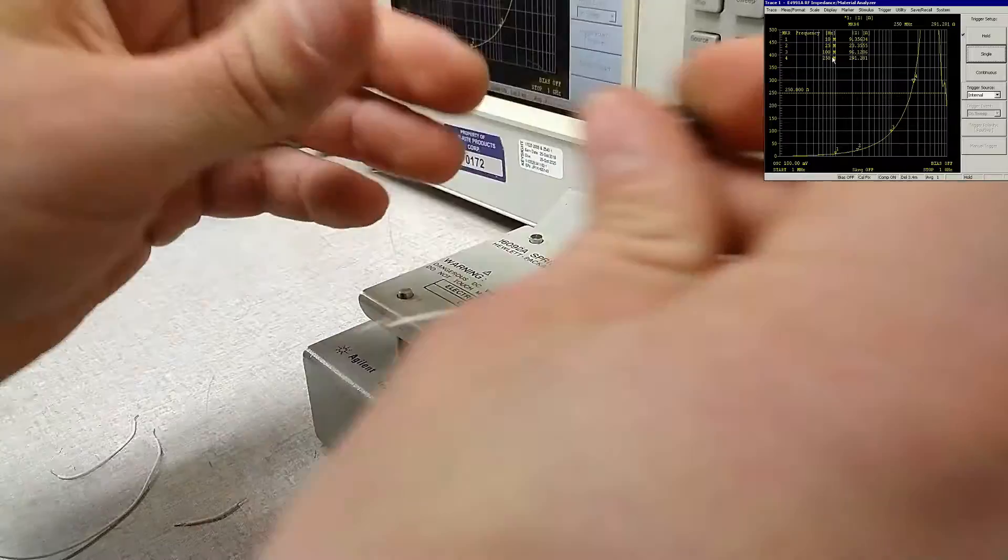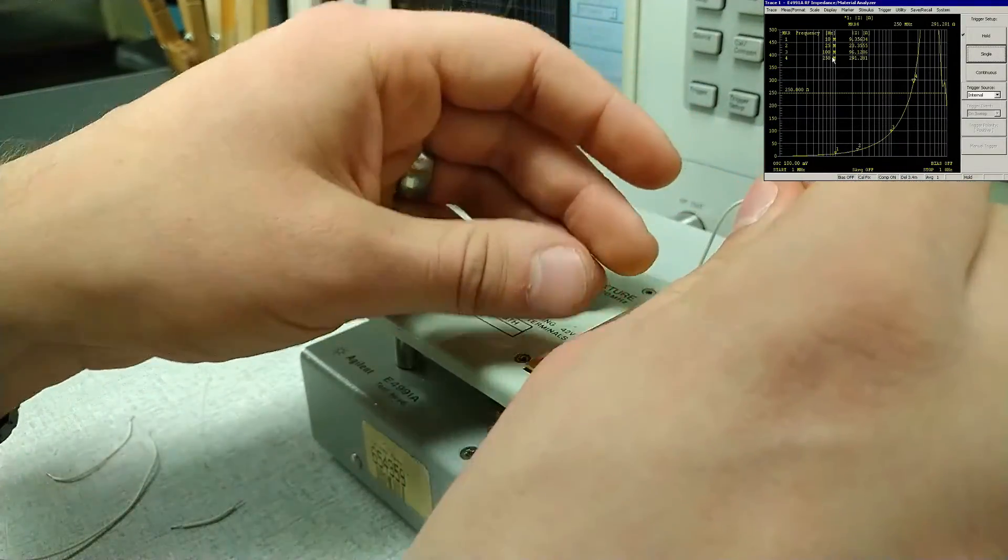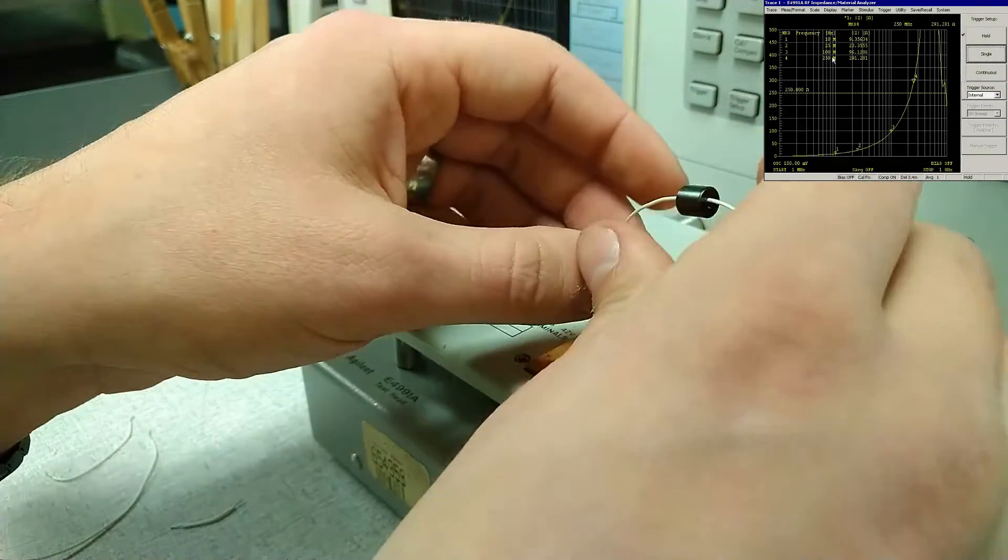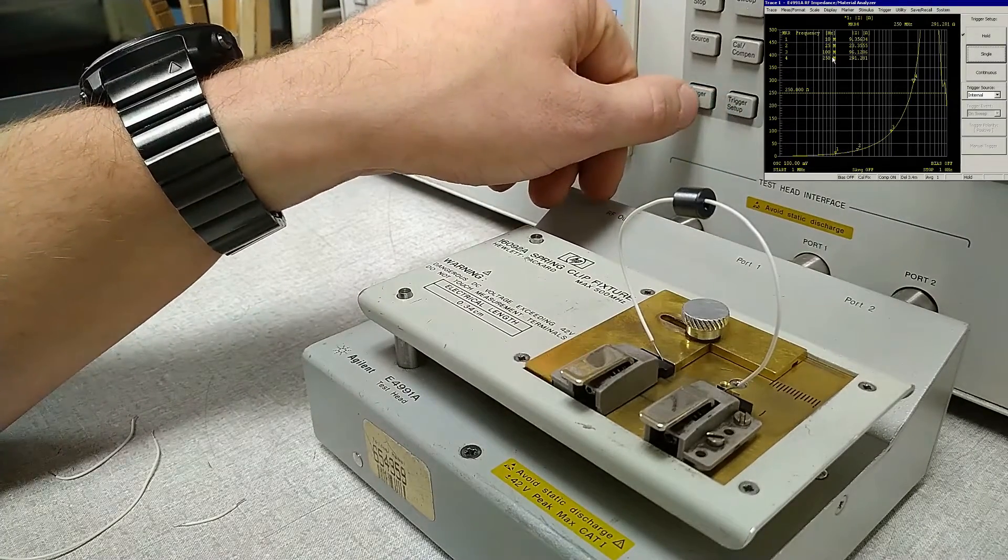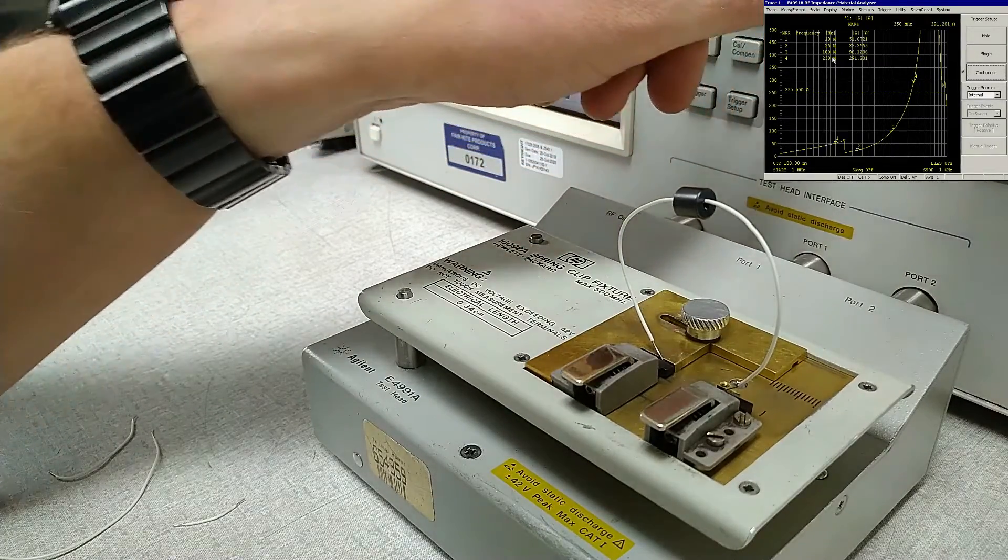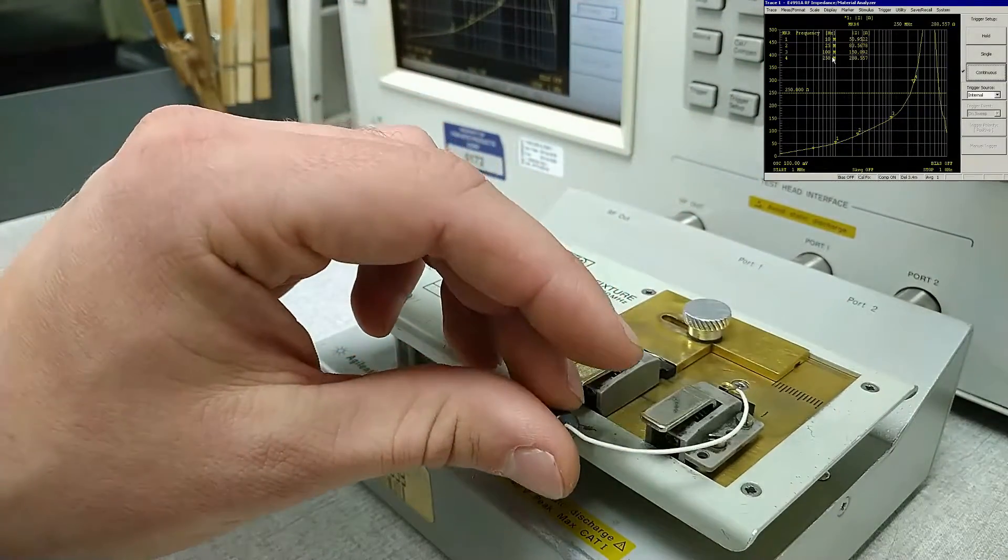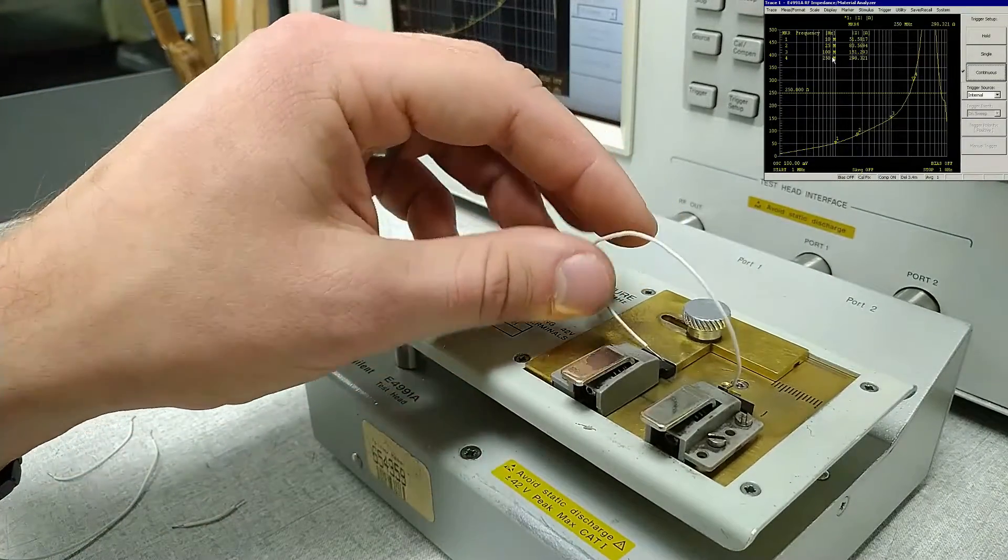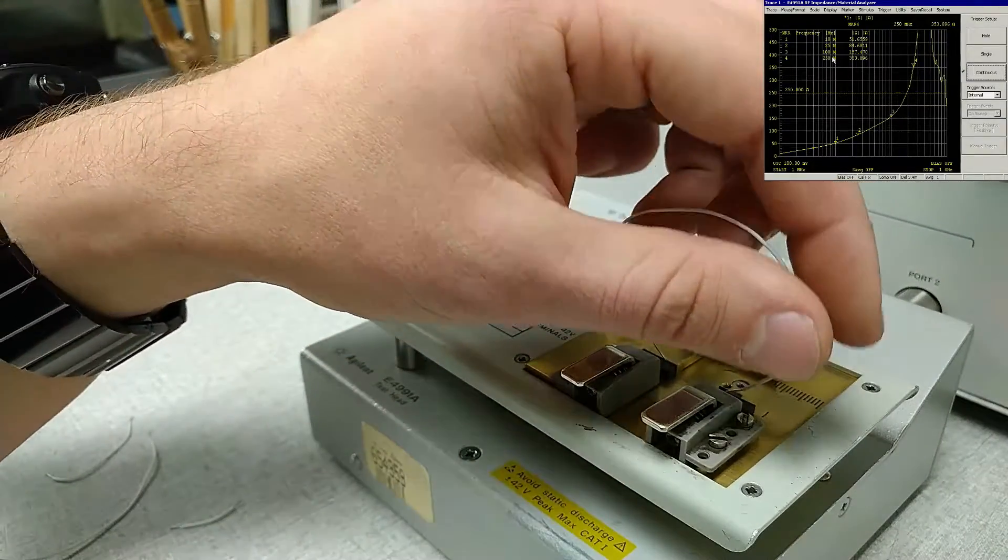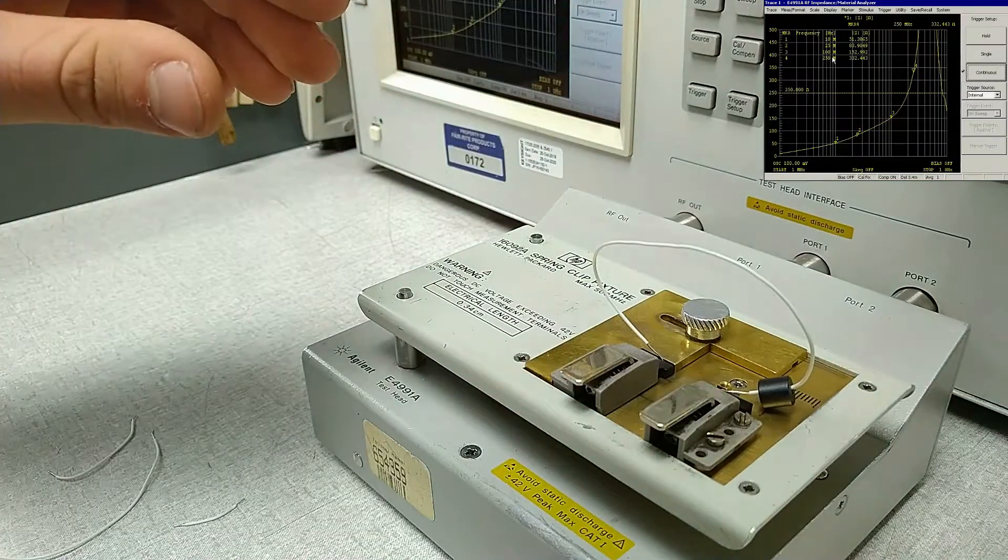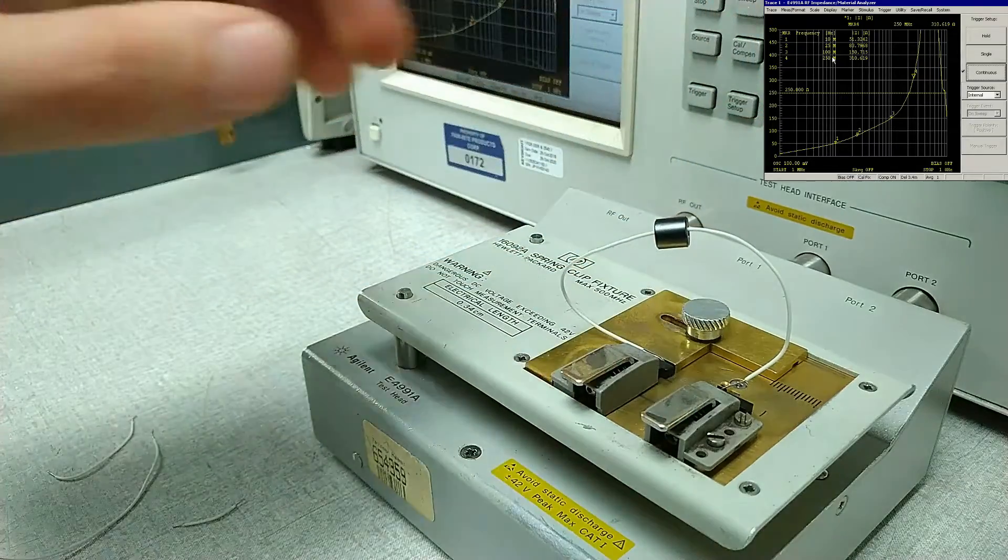One more issue with having wires this long for testing impedance is going to be repeatability. So let's put the trigger on this back to a continuous trigger. And just moving the part around, you can see the effect that this is having on the measured impedance values. And this would create a massive headache for our quality department, having wires this long and readings this inconsistent during testing.